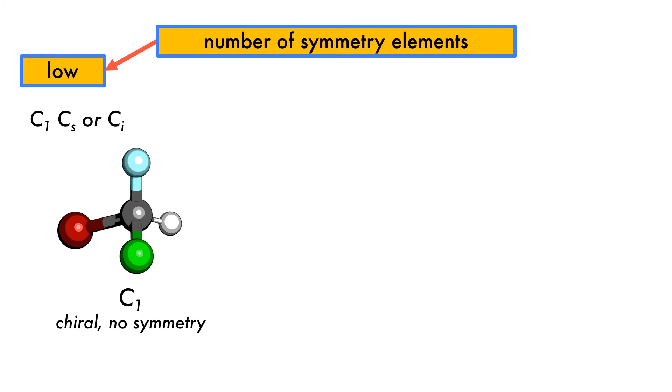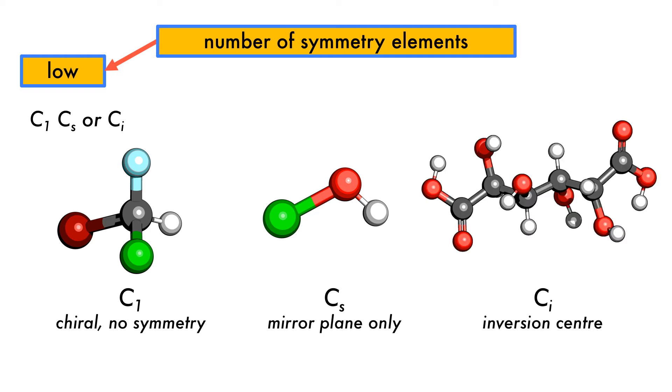This is bromochlorofluoromethane, which has the C1 point group, has no symmetry, and is chiral. Hypochlorous acid has the Cs point group and only has a mirror plane. The final low symmetry group, Ci, is represented by mucic acid, which only has an inversion center.